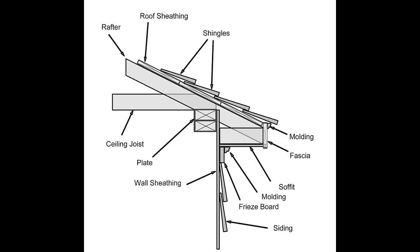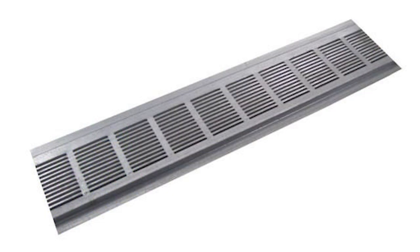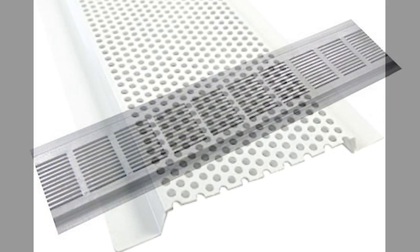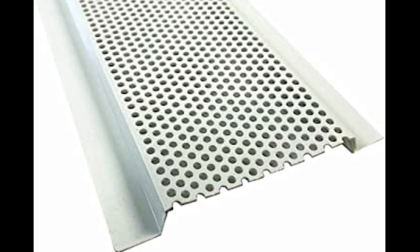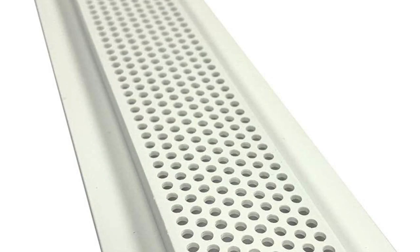Fascia boards are fitted over the end of your home's rafters or trusses and serve as a barrier between your roof line and the elements. This is also where the gutters on the home are placed. Vents installed in the soffit in this scenario are independent and are not associated with the bathroom exhaust fan — they come in different shapes and designs and are only used for the attic's intake of fresh air for circulation.